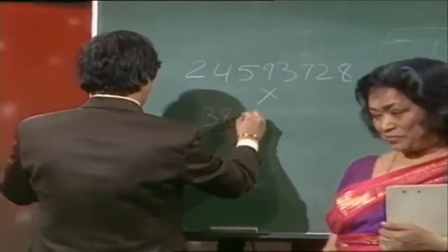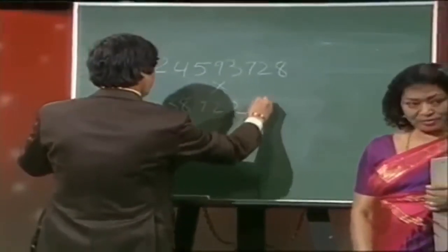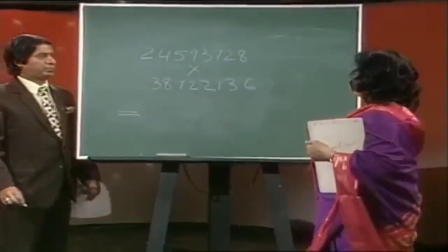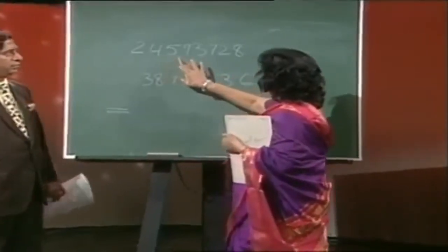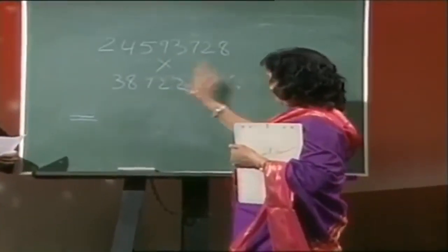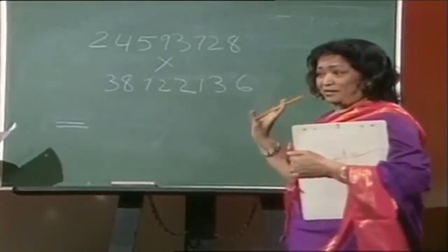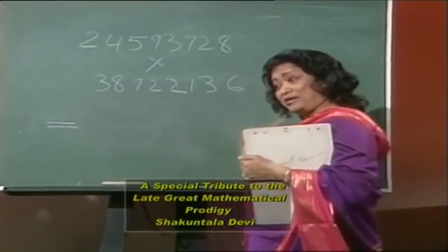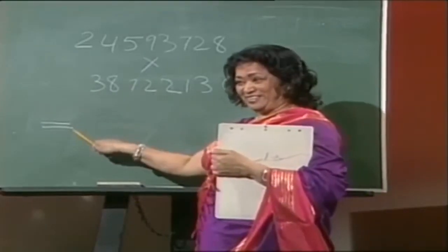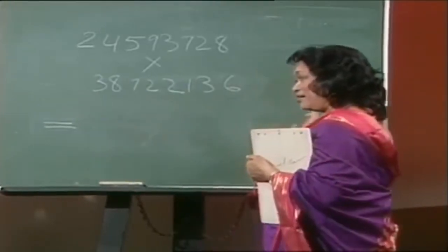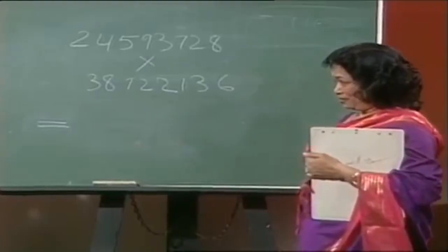Look at it once it is written down. The question is: 24593728 multiplied by 38722136. Now tell me — do you want me to give you the answer from this side to this side? Let's change the direction. Do you want the answer from this side to this side? We'll keep an unconventional method for later on.